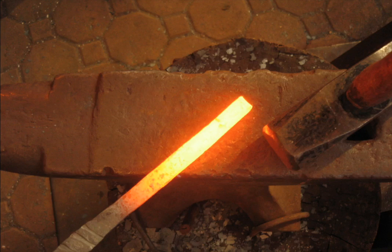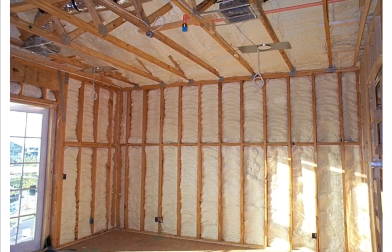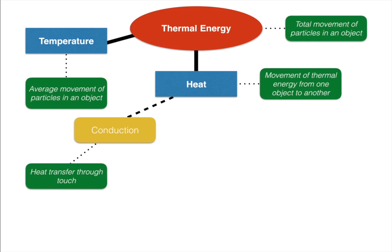For example, metal glows incandescent because heat moves quickly from fire to metal through direct contact. Meanwhile, insulation in your house keeps it cool in summer and warm in winter because it prevents conduction — it's fluffy with lots of air gaps, so warmer particles can't bump into other particles effectively. That's conduction: heat transfer through touch.